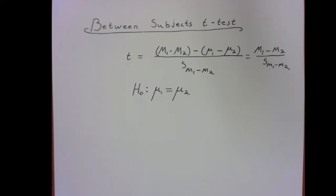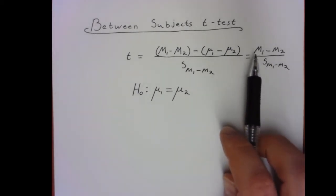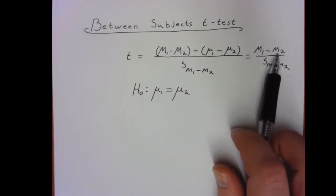But recognize that we're now sampling from a population twice, not just once. And so we actually have two sources of sampling error. The sampling error associated with sample 1 and the sampling error associated with sample 2.